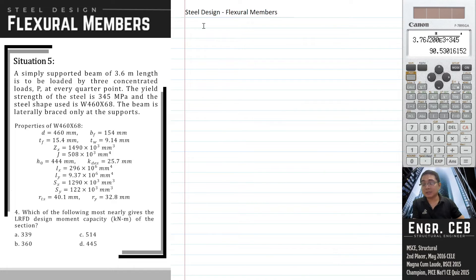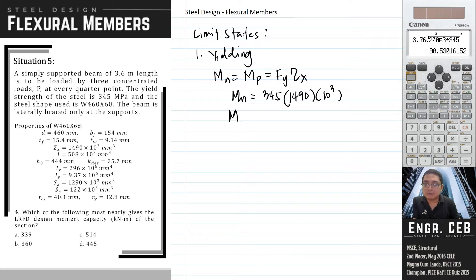If we have a compact section, meaning the flange is compact and the web is compact, it means that the limit states that we will be investigating is only yielding and lateral torsional buckling. Let us go first for yielding. The nominal moment strength based on the yielding limit state is Mp equals Fy times Zx. We substitute: that is 345 times Zx, which is 1490 times 10 cubed. We have Mn equals 514.050 kN·m.